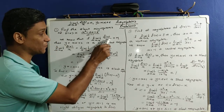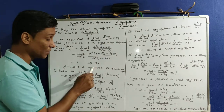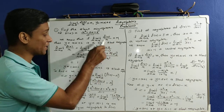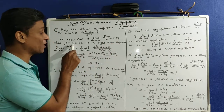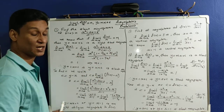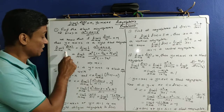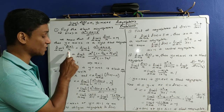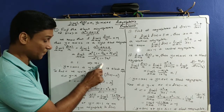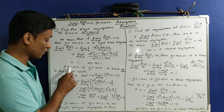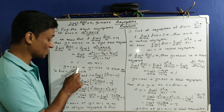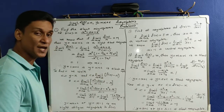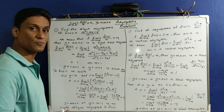Since the limit as x tends to infinity of f(x)/x equals 1, we have m = 1. Therefore y = mx + c becomes y = x + c, and y = x + c is a slant asymptote. We still need to find c.